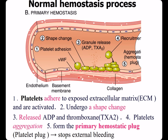This picture shows primary hemostasis. Platelets adhere to exposed ECM and are activated, undergoing a shape change. Platelets release ADP and thromboxane, that is TXA2. Platelets aggregate and form the primary hemostatic plaque, that is platelets plaque, which finally stops external bleeding.